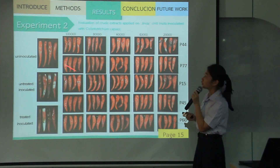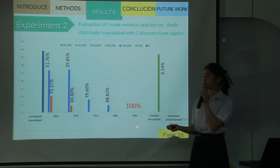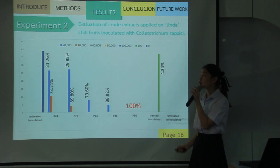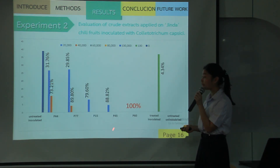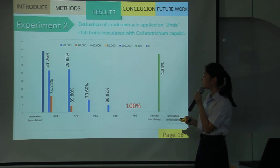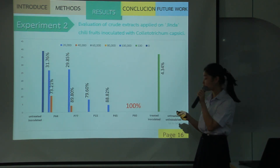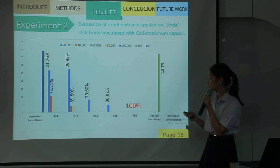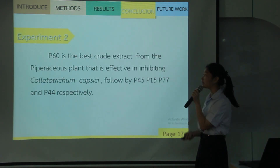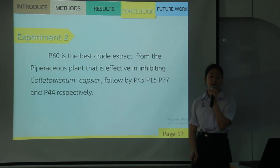This is the picture of results. From the graph, P60 completely inhibits fungal lesion development at all concentrations tested. P45 and P15 completely inhibit at 40,000 ppm, and P37 and P44 completely inhibit at 6,000 ppm. The percentages on this graph show inhibition of fungus lesion development compared to the control. Conclusion: P60 is the extract from Piper Rockcast that most effectively inhibits Colletotrichum capsicum, followed by P45, P15, P37, and P44 respectively.